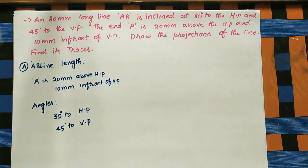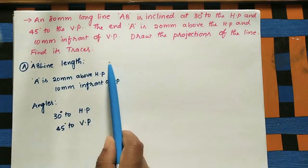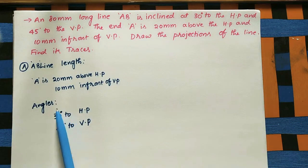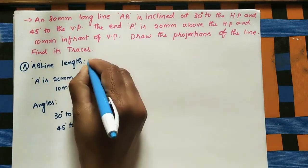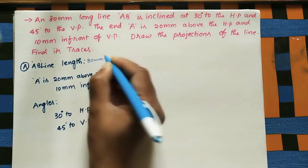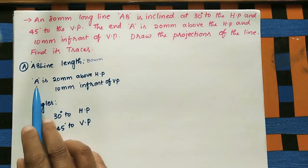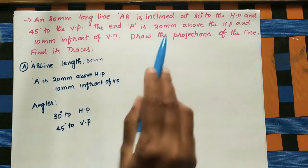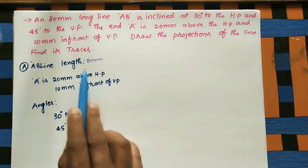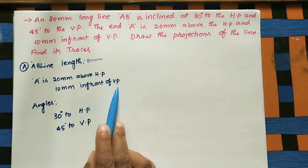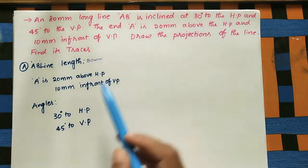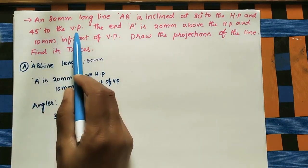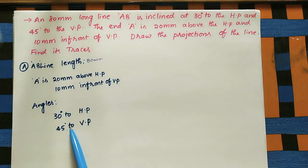First, write the given data. Line AB length is 80 mm. Point A is 20 mm above HP and 10 mm in front of VP. Line AB makes 30 degrees to the HP and 45 degrees to the VP.